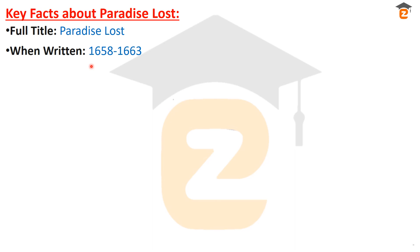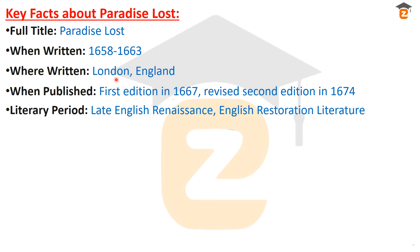After John Milton became blind, he composed this poem. It was written in London, England. The first time it was published with ten books in 1667. Later on it was revised, and the revised edition of Paradise Lost came in the year 1674 with two more books.